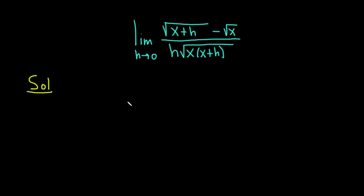The strategy we're going to use is we're going to rationalize the numerator. Basically we're going to multiply by 1 in a clever way. We're going to multiply by the square root of x plus h plus the square root of x, all divided by the square root of x plus h plus the square root of x. And what this does is it allows us to use the difference of squares formula in the numerator.